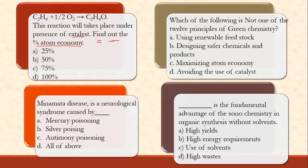This is a reaction which takes place in the presence of a catalyst — find out the percentage atom economy. Atom economy is the amount of total desired product divided by total product mass. Since there is no byproduct, dividing the desired product by itself gives 100% atom economy.